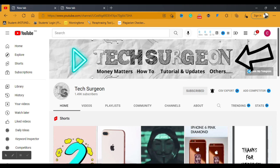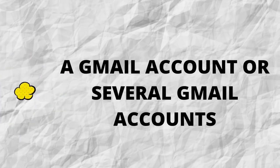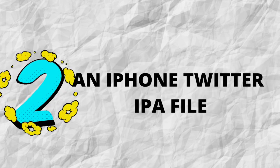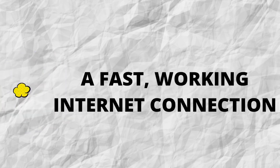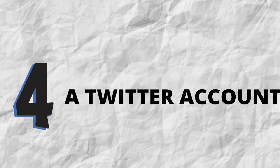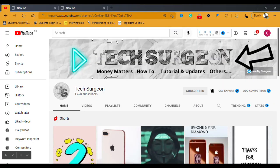Now let's get into the topic: how to use Twitter for iPhone on your Android device. For this to work, you need four key components. Number one: a Gmail account, or several Gmail accounts. Number two: an iPhone Twitter IPA file. Number three: a fast working internet connection. And number four: a working Twitter account.